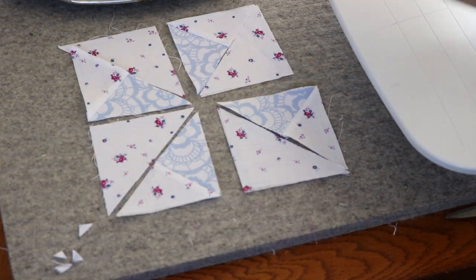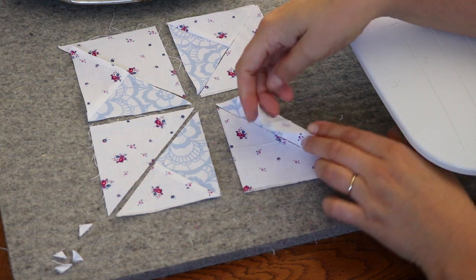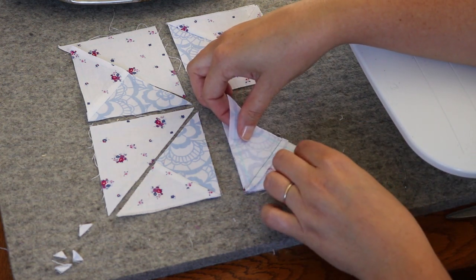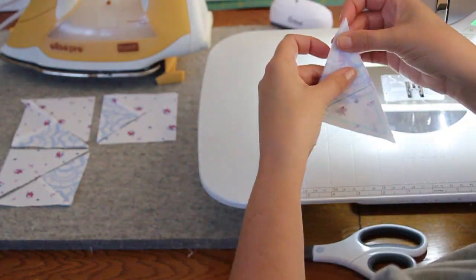Do a quick visual check to make sure it all makes sense and then I can stitch the half square triangle units together.